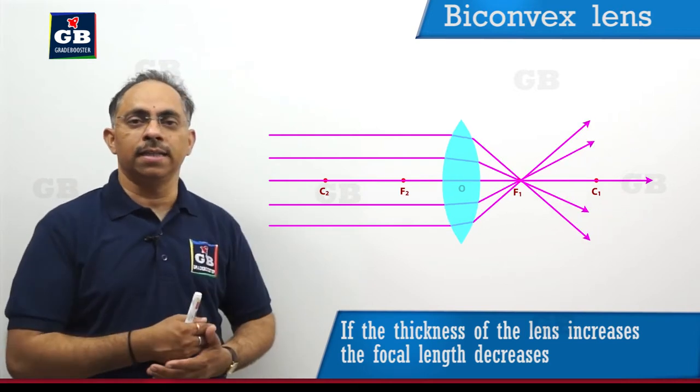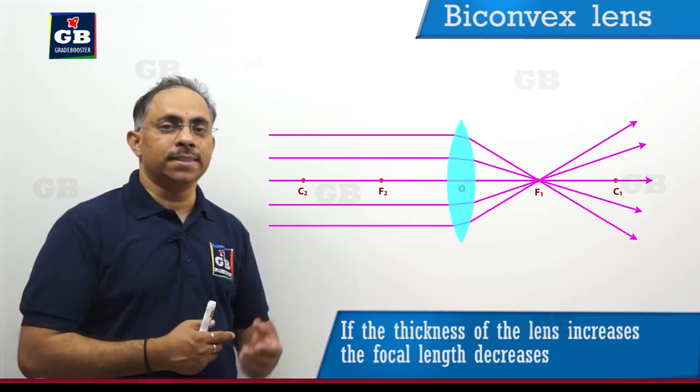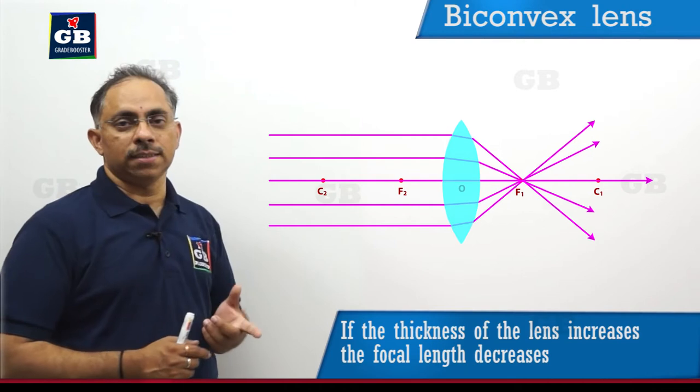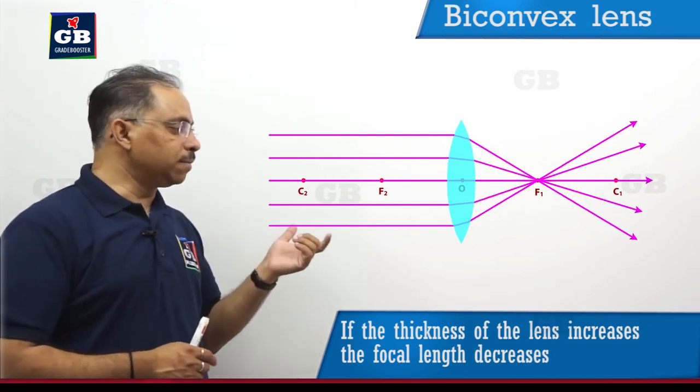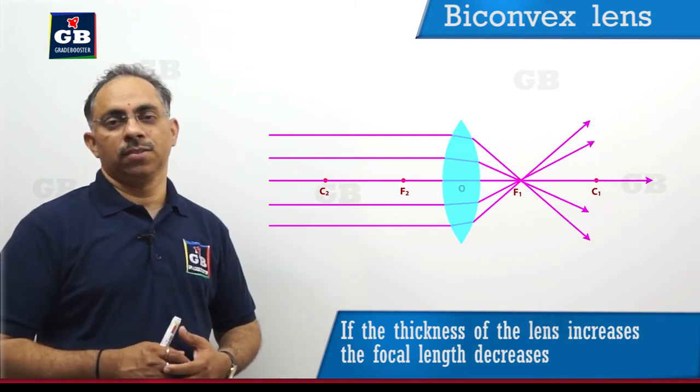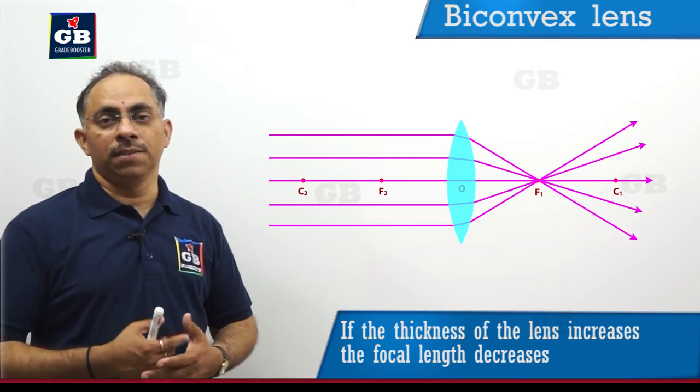Let us consider one more lens like shown here. If you compare these two lenses, the earlier one and this one, the thickness is more at the center. So, how does it affect the focal length?